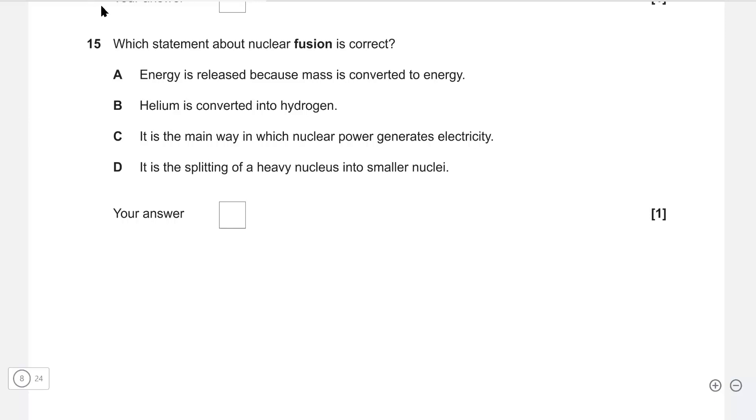Which statement about nuclear fusion is correct? For revision, I'm going through the ones which are not correct first. It is the splitting of a heavy nucleus into smaller nuclei is incorrect because this is nuclear fission. It is the main way in which nuclear power generates electricity, once again this is nuclear fission. Helium is converted into hydrogen, that's not correct. Energy is released because mass is converted to energy, that is absolutely correct for nuclear fusion. The correct answer is A.